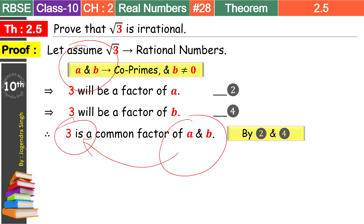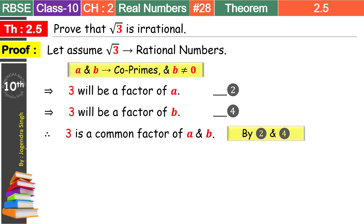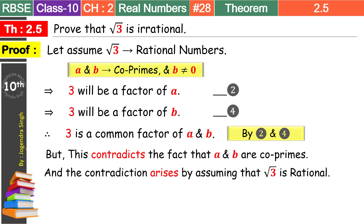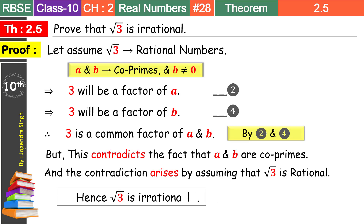अब इसकी language लिखने का तरीका देख लो, क्योंकि language में ही बहुत सारे students अपने marks कटवाते हैं। But this contradicts the fact that A and B are co-primes. But this contradiction arises by assuming that root 3 is a rational number. So it's clear कि यह rational number नहीं है — hence root 3 is an irrational number. Hence verified.